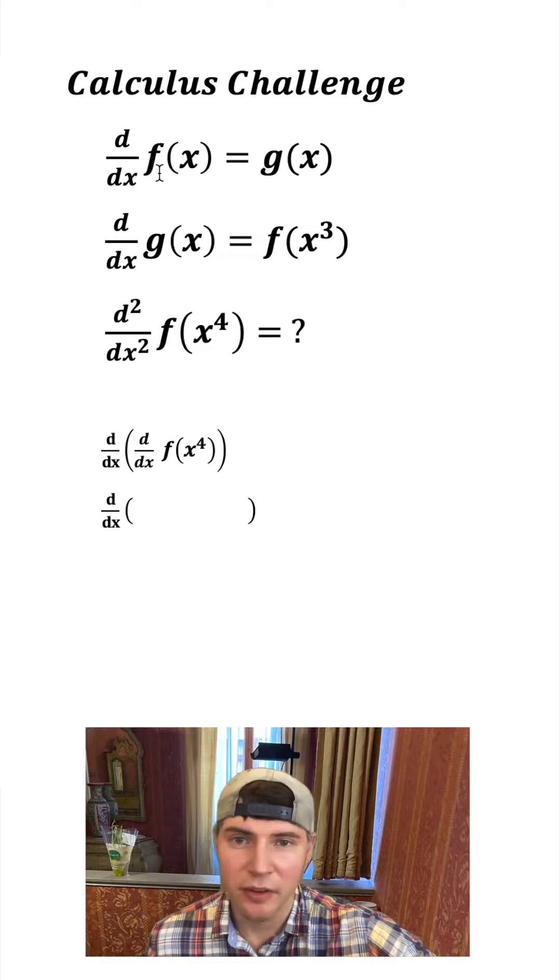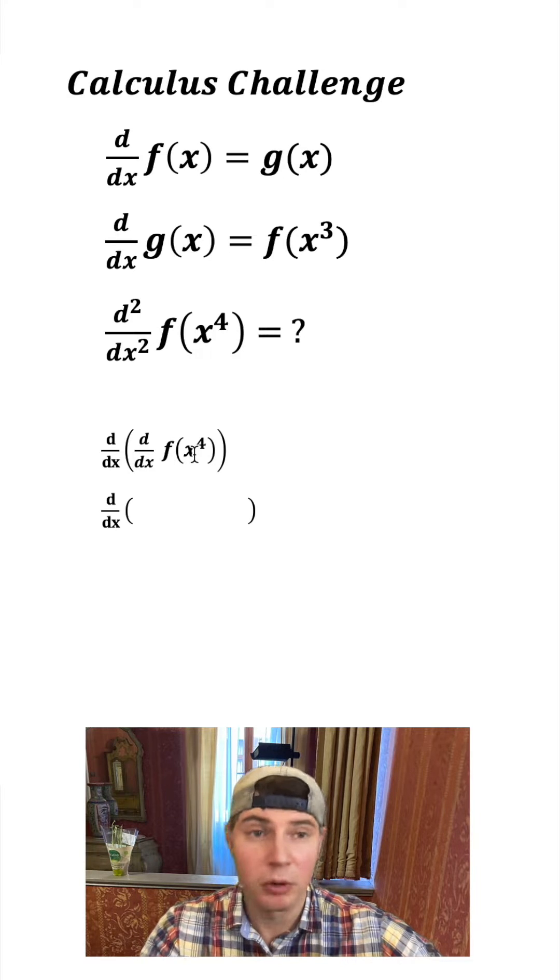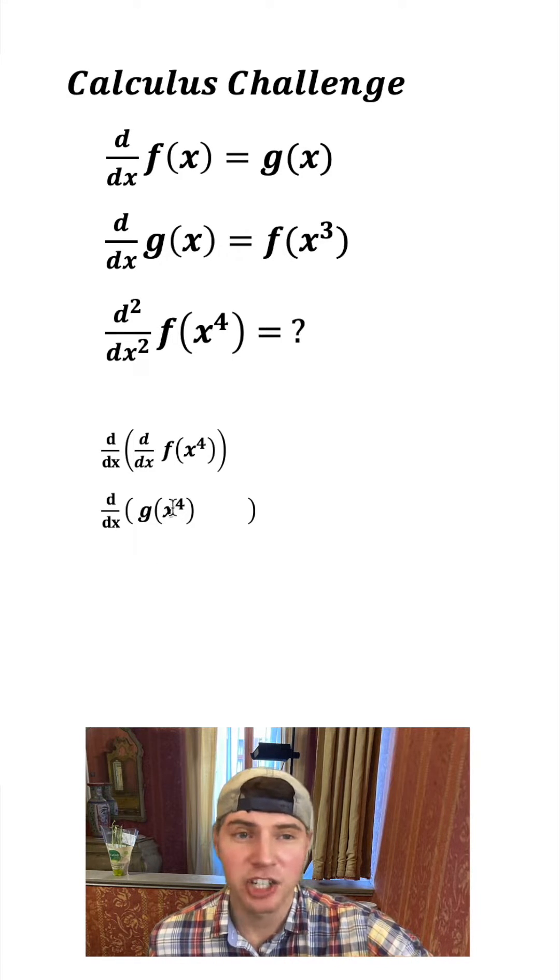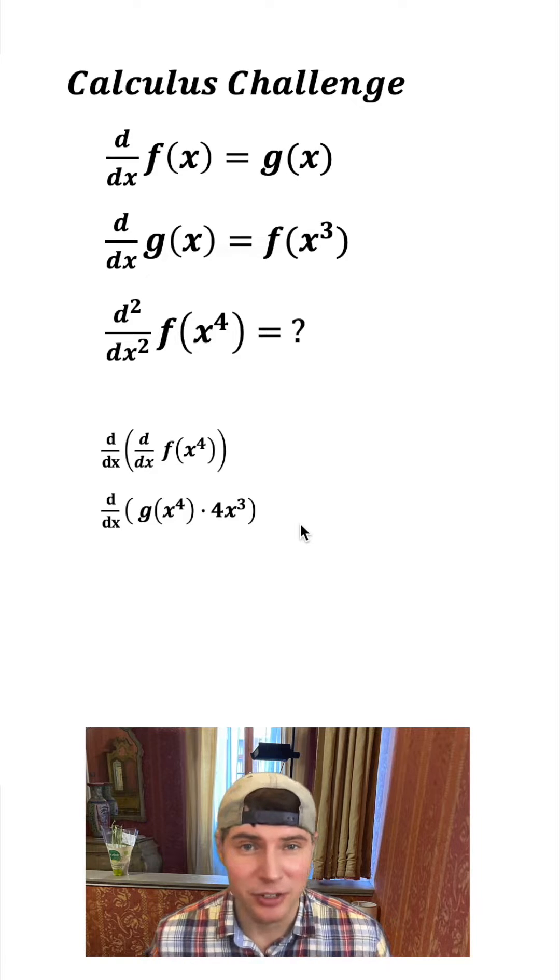So this up here says the derivative of f of x is g of x. So this is just gonna be g of whatever's inside here, g of x to the fourth. And then we have to take the chain rule of whatever's inside here. So we're gonna multiply this by the derivative of what's inside here, which is four x cubed. Our first step is now done.